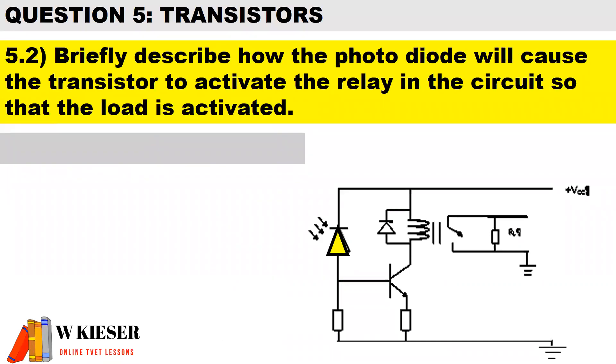In question 5.2, briefly describe how the photodiode will cause the transistor to activate the relay in the circuit so that the load is activated.